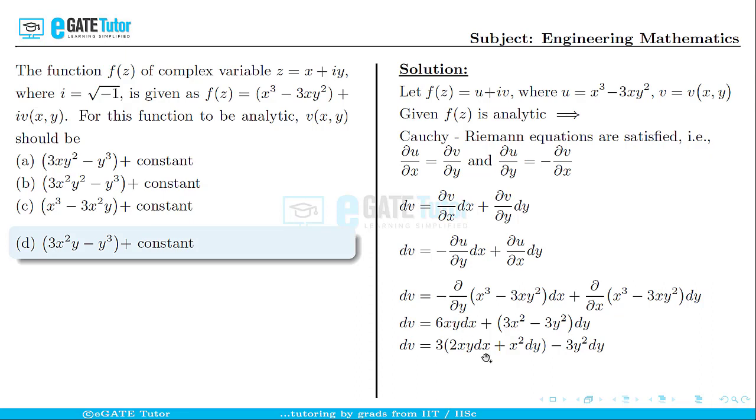From these first two terms, let us take 3 common, so we get dv = 3(2xy dx + x² dy) - 3y² dy. When you look at the term in the bracket, that can be written as d(x²y).